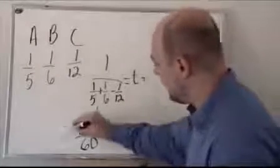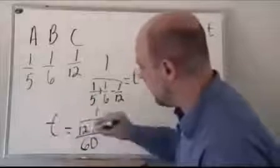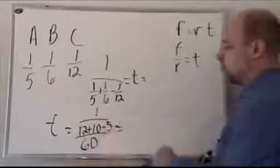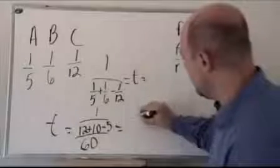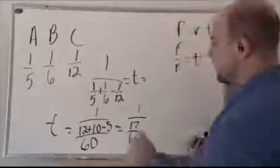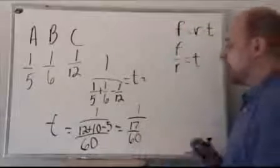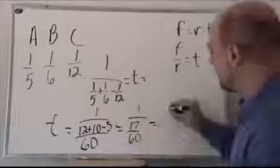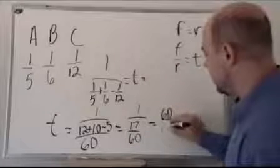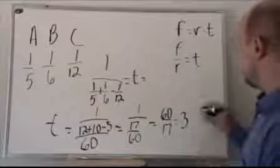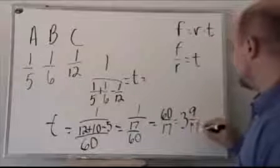Five times one is five. And that equals the time in hours, which also equals one divided by twelve plus ten is twenty-two minus five is seventeen. One divided by seventeen over sixty. When we divide by a fraction, we multiply by the inverse of the fraction. So it's one times sixty over seventeen, or sixty over seventeen, which equals three and nine seventeenths.